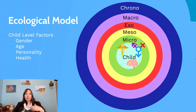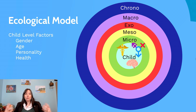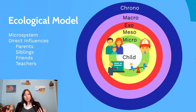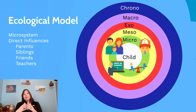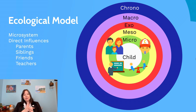Moving outward, we have the microsystem — the direct influences in a child's life. These are the people they see on a regular basis and directly interact with: their parents, siblings, teachers, friends, and coaches.